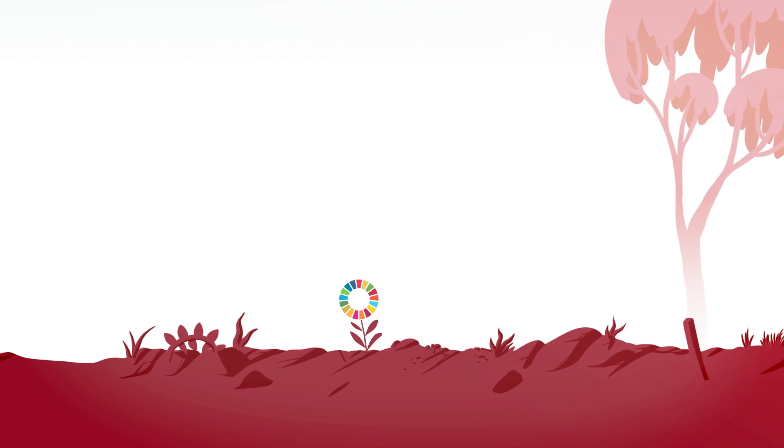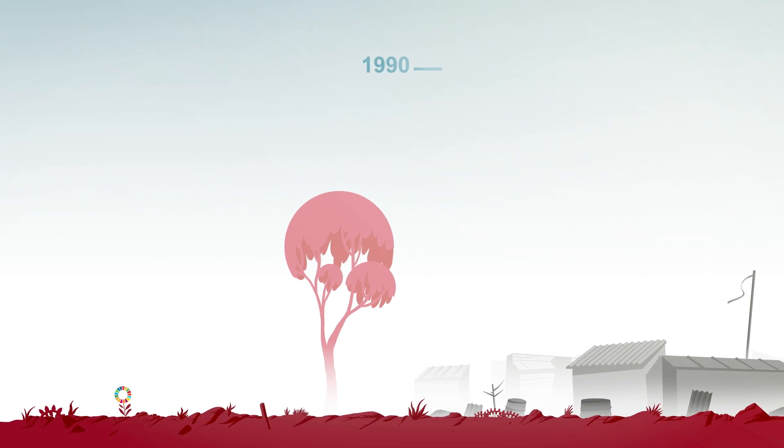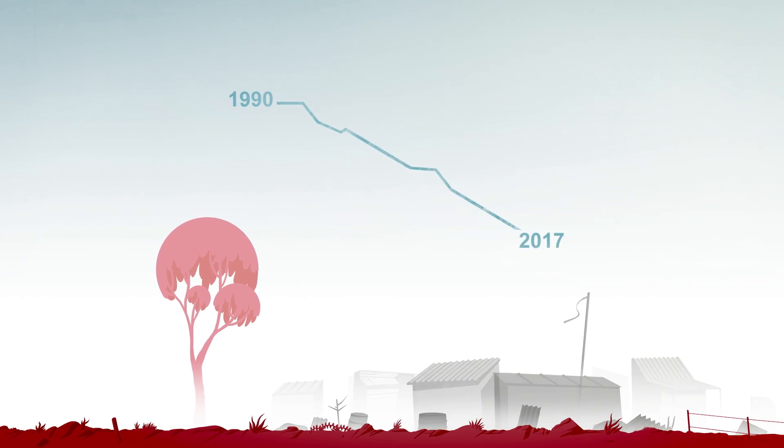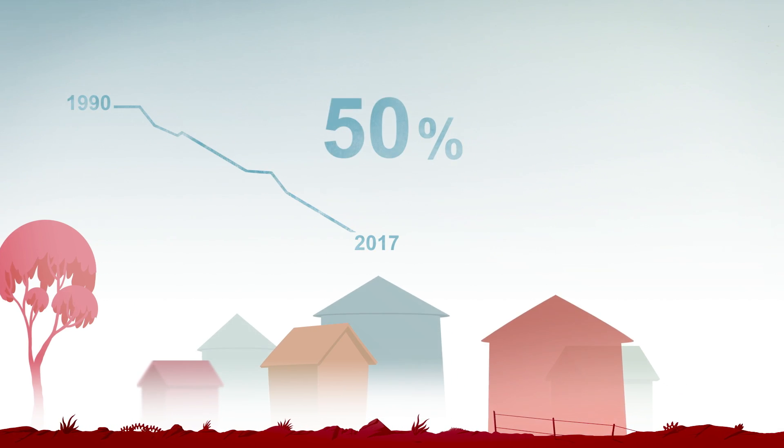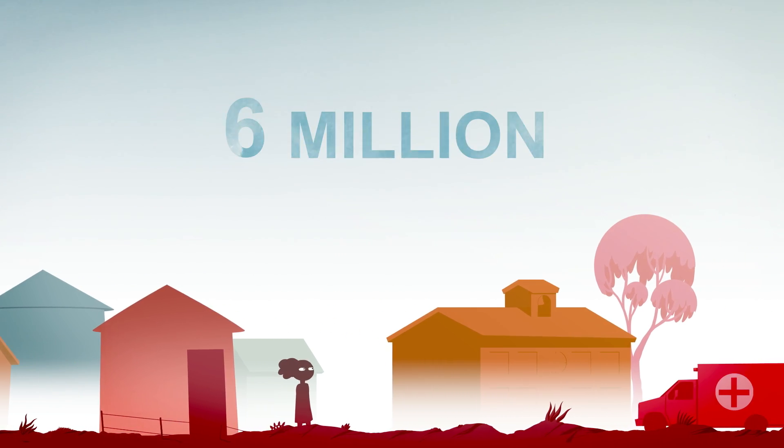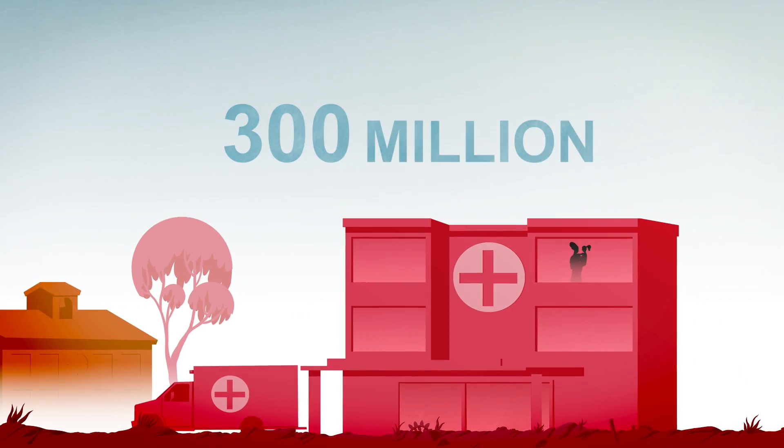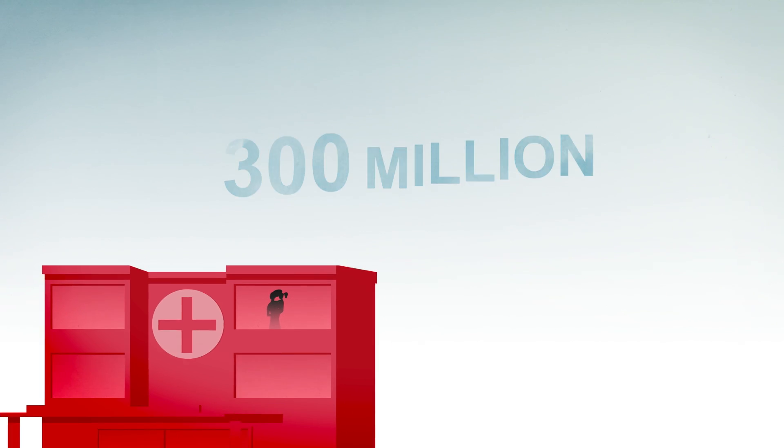Bill and I love data. The numbers matter to us. Between 1990 and today, the number of people living in poverty has been cut in half. Six million fewer children die every year. 300 million women now have access to contraception. Those numbers are amazing.